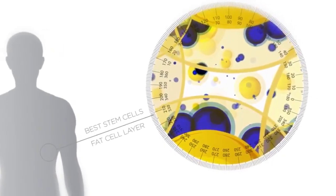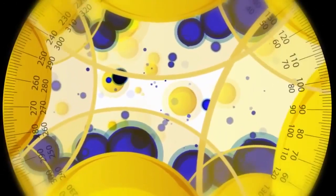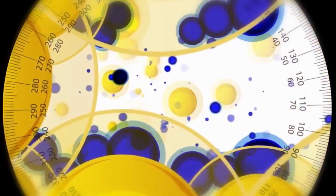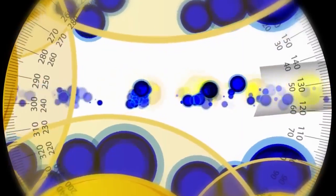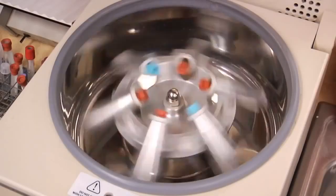The process begins with the search for the best stem cells in the human body. The stem cells are found within the body's fat layer. By using a sterile and specialized syringe, doctors extract a mixture of fatty tissue and a group of healthy stem cells.